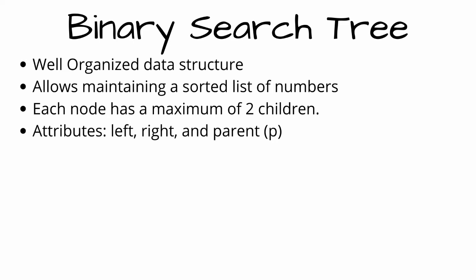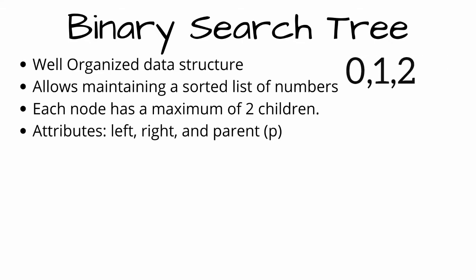It is called binary because each tree node has a maximum of two children — they can have at most two children. That is, the number of children can be 0, 1, or 2. It cannot be more than 2.